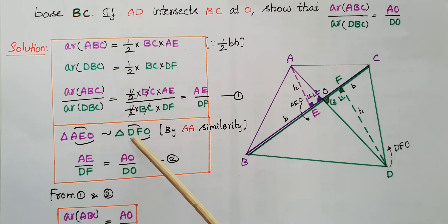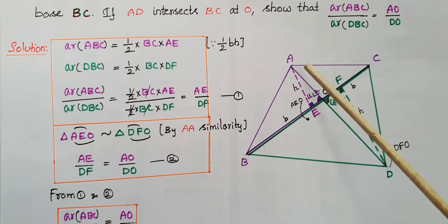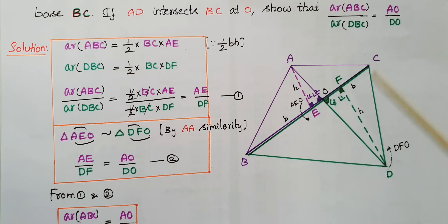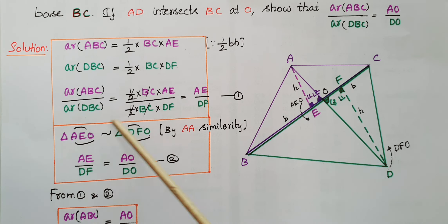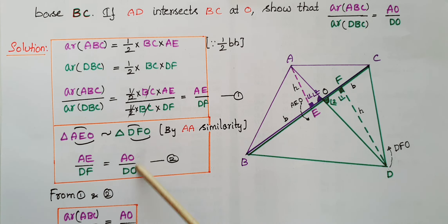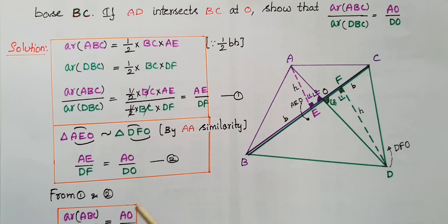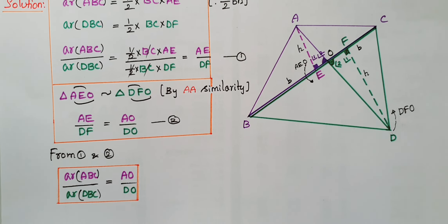Therefore, triangle AEO is similar to triangle DFO. Once these two triangles are similar, we can equate the ratios of their corresponding sides: AE by DF equals AO by DO. This is our second equation. Combining equations 1 and 2, area of ABC by area of DBC equals AO by DO. Hence proved.